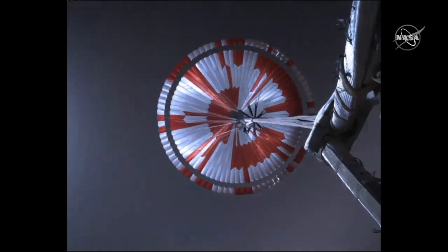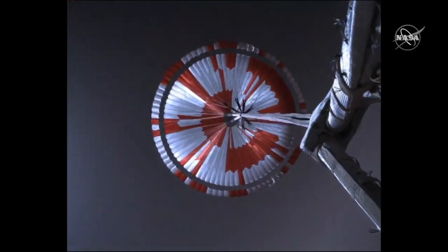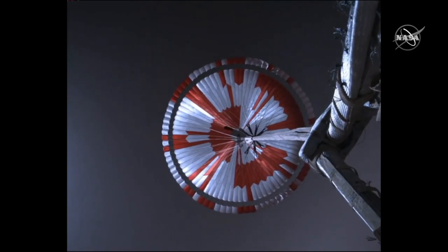There's no evidence of tangling of the lines, which is great. There's about two miles of lines in the parachute system. So the fact that we don't see any evidence of tangling or any kind of other misbehavior is great news.